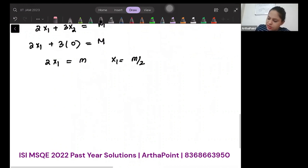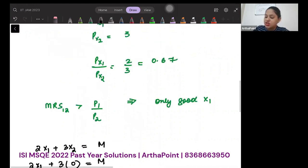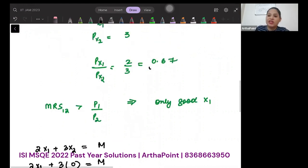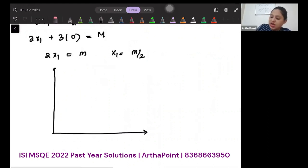Just for our sake, if I were to draw the budget line, the budget line has a slope of 0.67, so it will be flatter. And the ICs will be steeper. So my ICs will be like this.